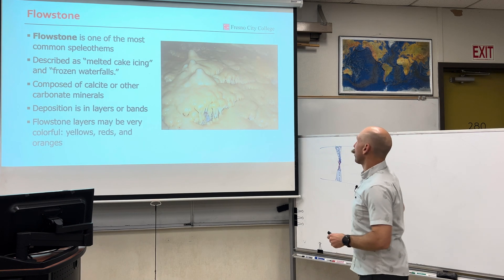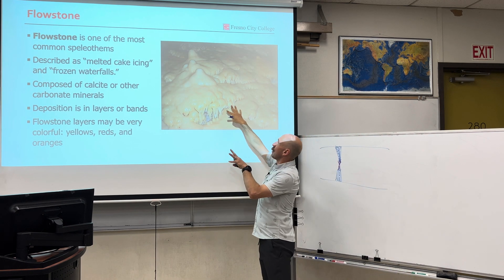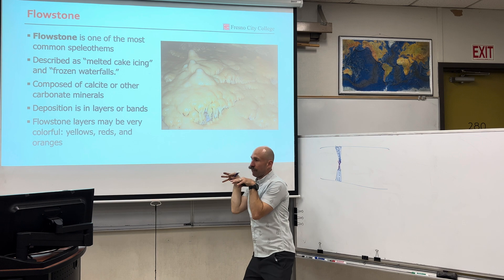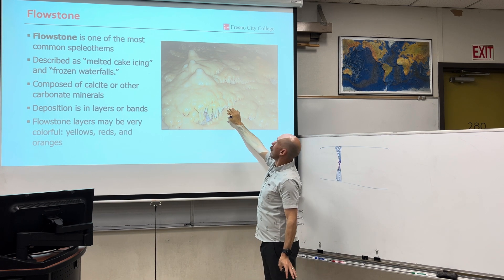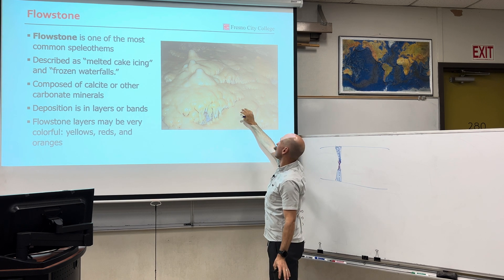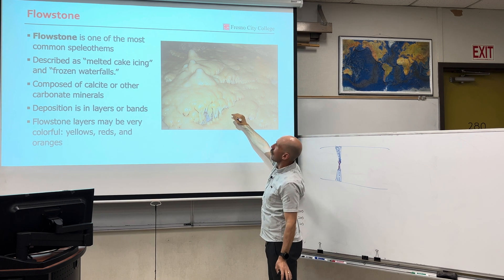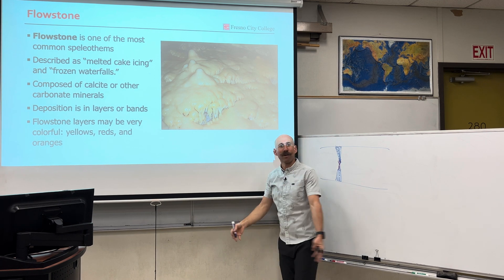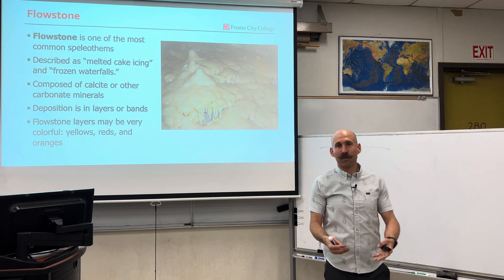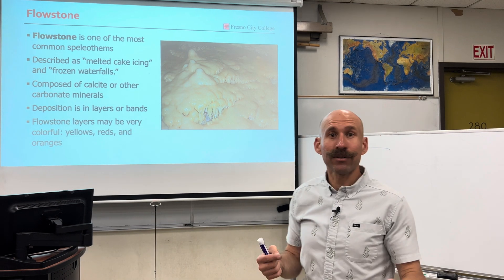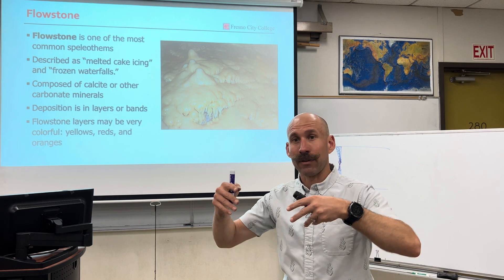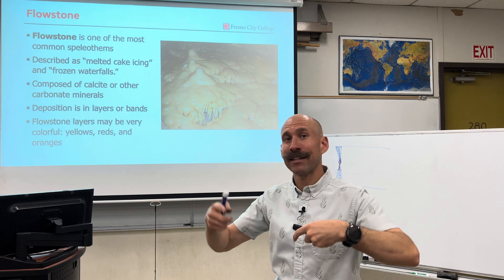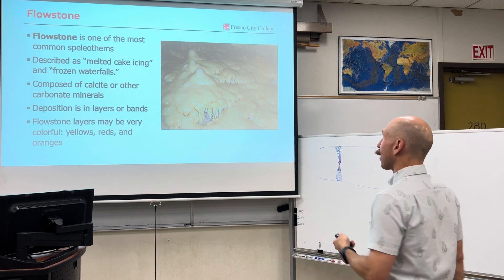Another cool feature: when deposition of water flows over the surface or the bottom, it forms a unique type of deposit known as flowstone. It looks like melted cake icing or frozen waterfalls. Mineral-rich water inside of caves — the minerals come from the dissolution of the rocks, and that same water that's dissolving the rocks deposits inside the empty cavities, creating flowstone.